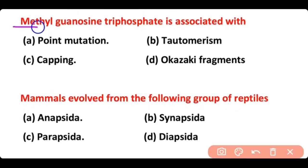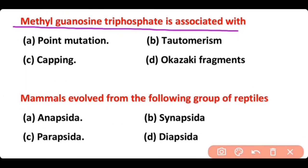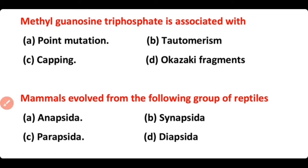Methyl guanosine triphosphate is associated with: point mutation, tautomerism, capping, or Okazaki fragments. The correct answer is option C. Methyl guanosine triphosphate is associated with capping at the 5' end of messenger RNA.